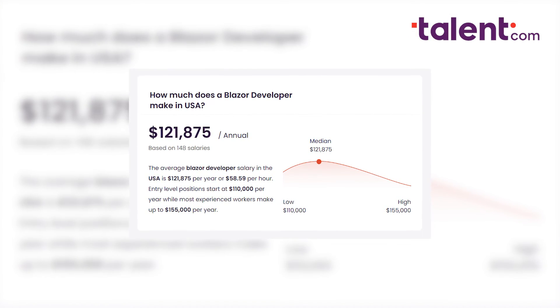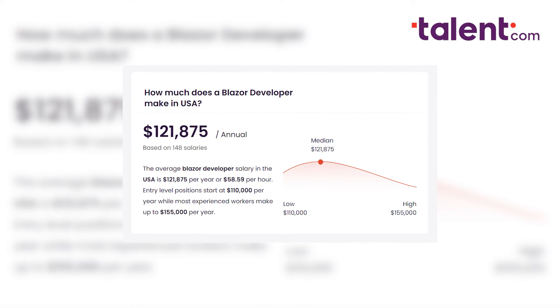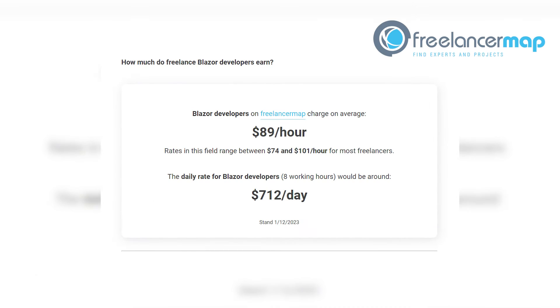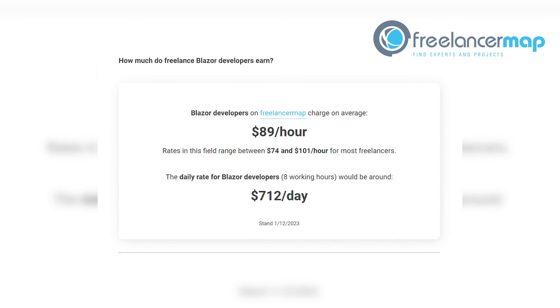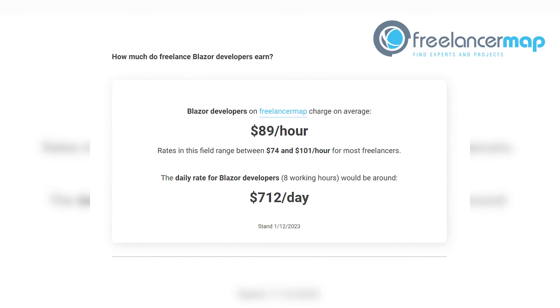What about you — how much can you earn as a .NET or Blazor developer? According to talent.com, Blazor developers earn an average of $120,000 US dollars per year, with potential earnings of up to $150,000. And as a freelancer, FreelancerMap states you can charge an average of $89 per hour, leading to over $800 per day with more experience.